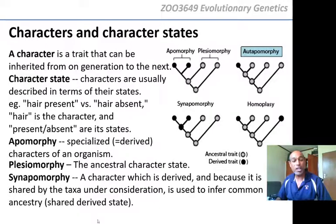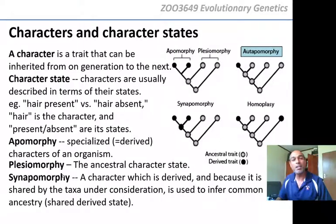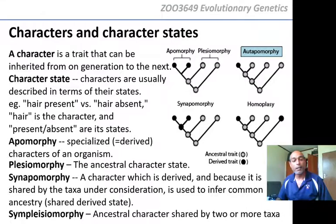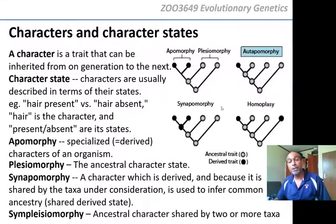Synapomorphies are the character states we need to build a tree. A symplesiomorphy, on the other hand, is an ancestral state that is shared by two or more taxa. In our tree example, two individuals sharing the gray ancestral state is a symplesiomorphy, while the two sharing the black derived state is a synapomorphy.